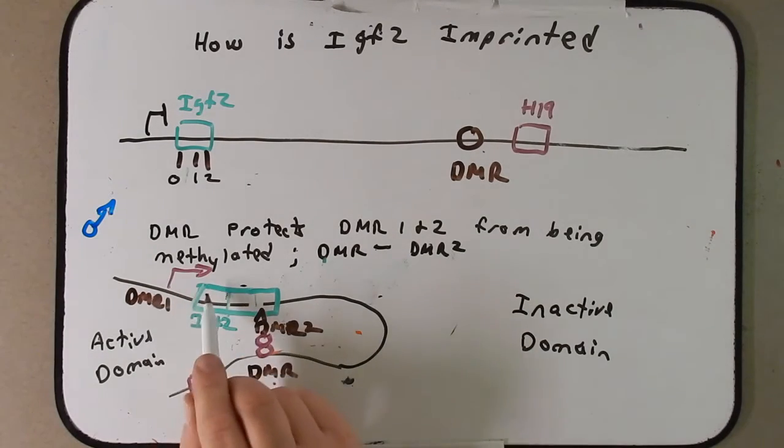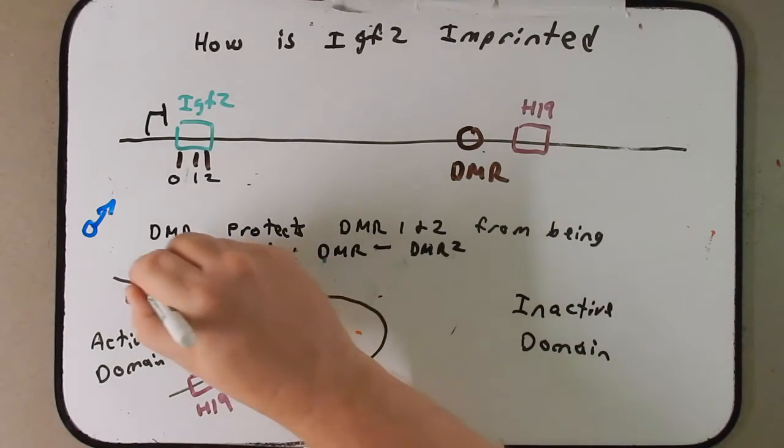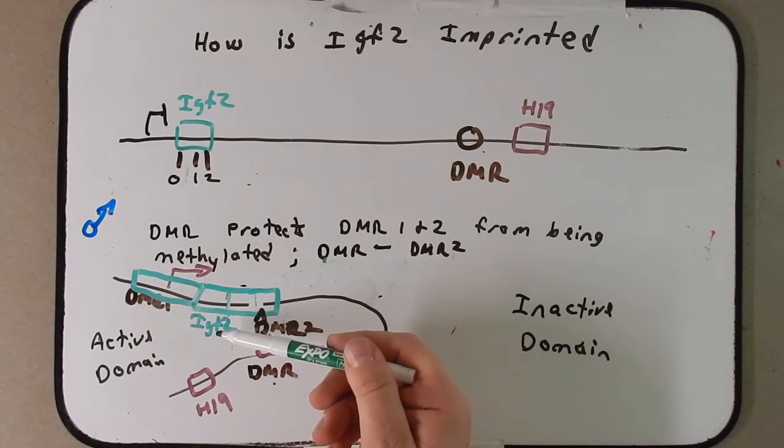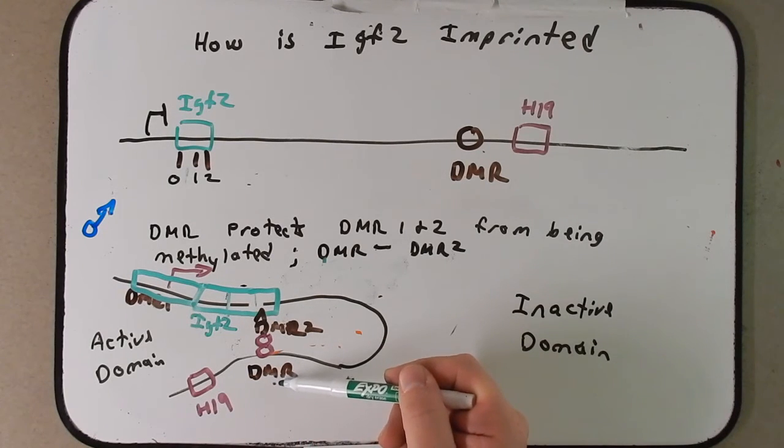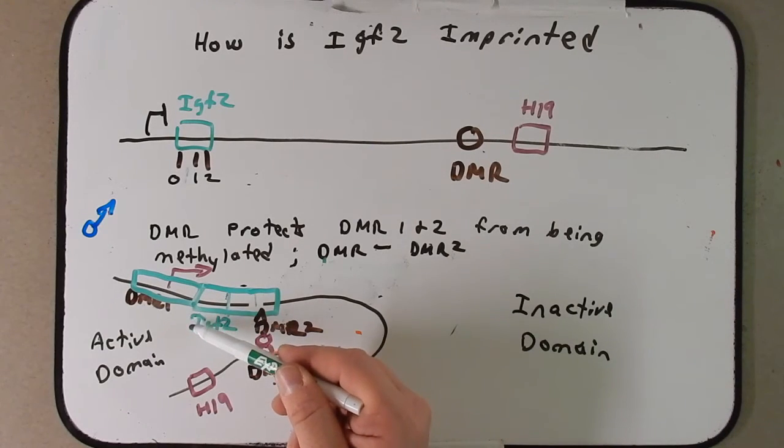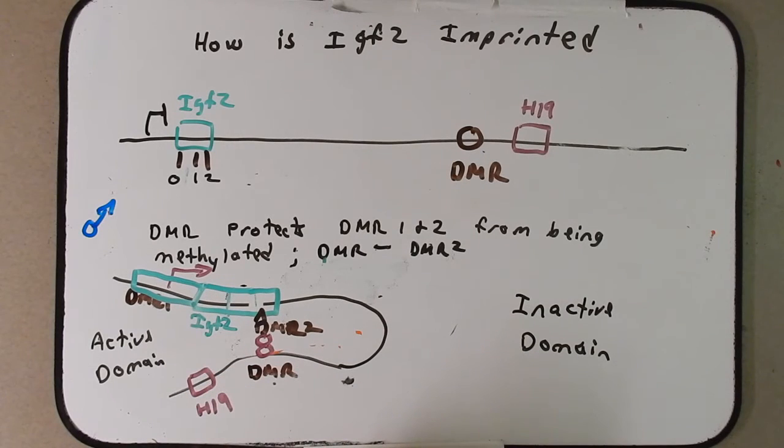And though I didn't draw it here, I just realized DMR1 is actually in the gene of IGF2. I guess I could adjust the drawing. I have that power. So again, in the paternal copy from dad, DMR2 shifts down here so that it can interact with DMR from H19. In doing so, we have pushed the gene IGF2 into this active domain of the chromatin, leaving this inactive domain behind.